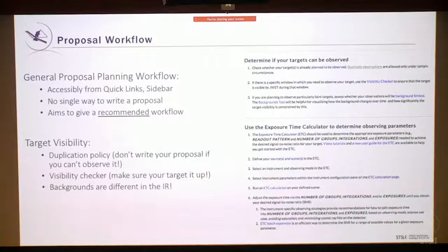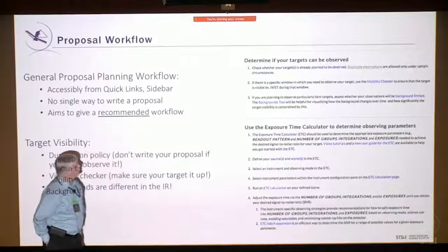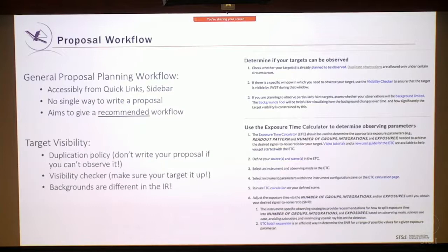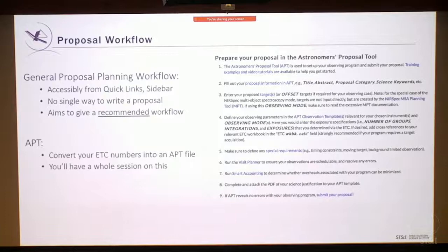Continuing through the proposal workflow: after preliminary work, there's target visibility. Most people looking at point sources don't have to worry about target visibilities, but if you care about timing or orientation of the field on the sky, these target visibility tools can help a lot. The workflow walks you through that and points you to the right tools. Backgrounds matter if you're background limited, and there's a backgrounds tool we'll talk about in the ancillary tools talk this afternoon. Then it moves on to ETC work and APT.